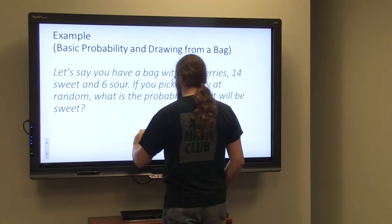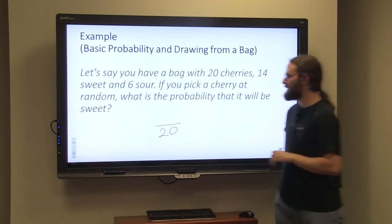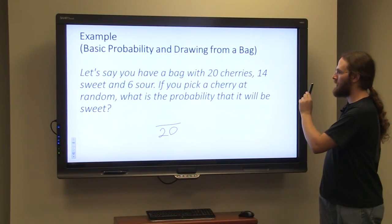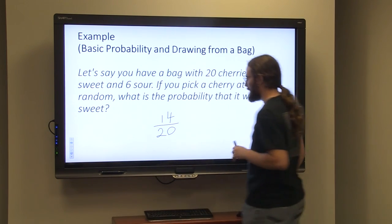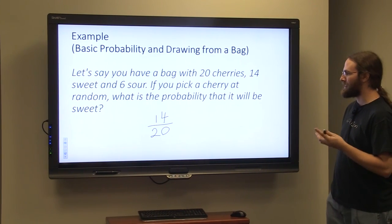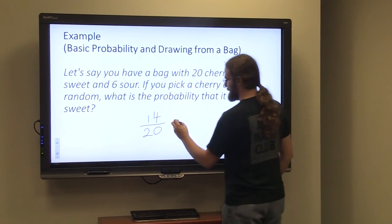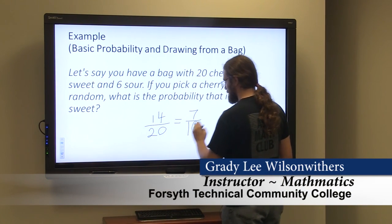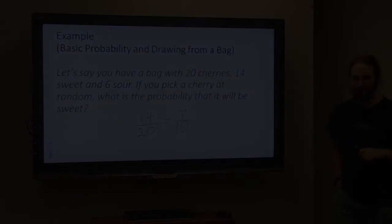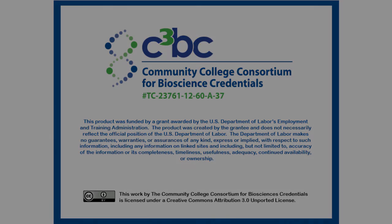The total number of outcomes here would be 20. There are 14 sweet cherries, so the probability of selecting a sweet cherry would be 14 out of 20. Since this is a fraction, it can be reduced to 7 over 10.